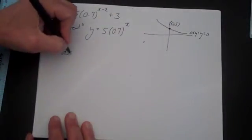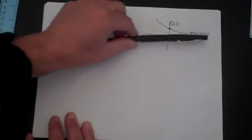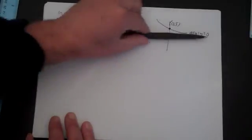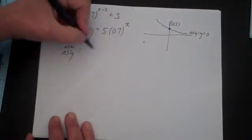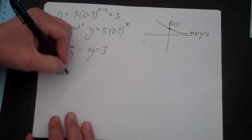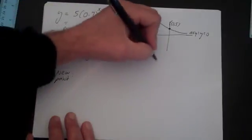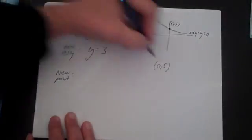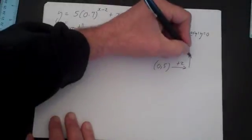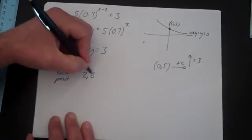Now I'm going to find the new asymptote. The asymptote was y equals 0. Moving it left and right 2 doesn't change anything. But moving it up 3 does. So the new asymptote is y equals 3. One new point. The point 0, 5 will go right 2 and up 3. So now that point will be 2, 8.